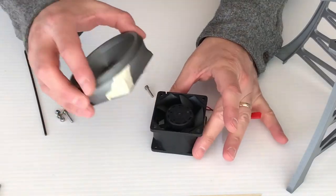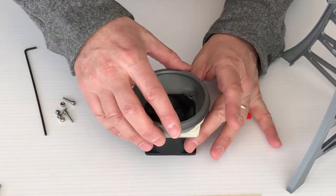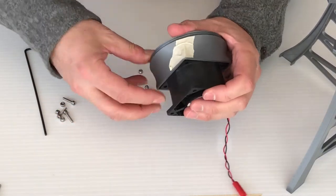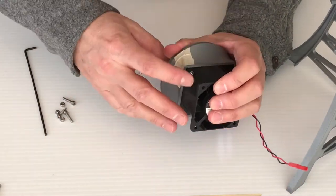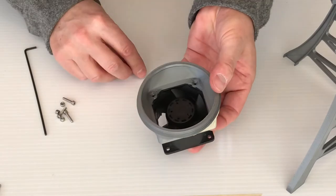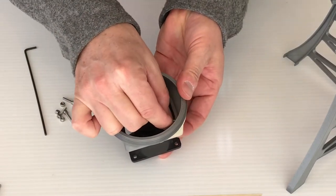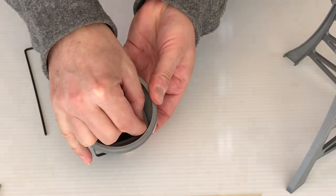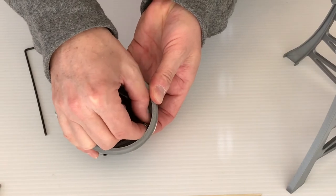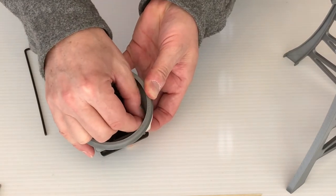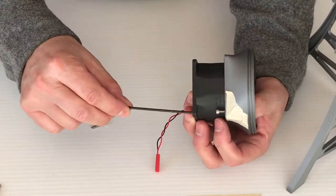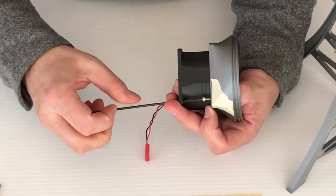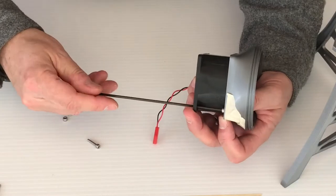Now we'll attach the adapter to the fan. We'll start with the front corner. Get that nut finger tight there. Put it in this position. Feed the Allen wrench through the fan hole. There you go.